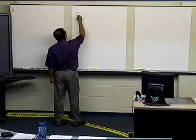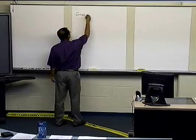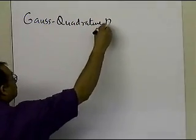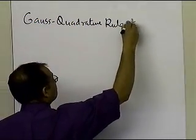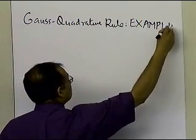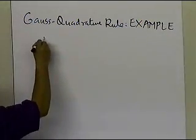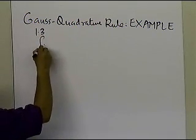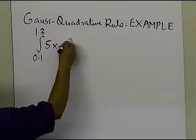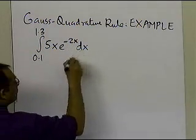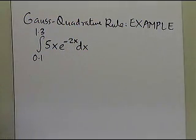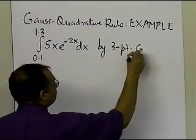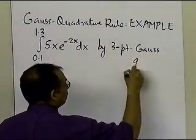In this segment, we're going to take an example of the Gauss quadrature rule. So let's suppose somebody tells you to integrate the function from 0.1 to 1.35 of x·e^(-2x) dx. They ask you to integrate this particular function by the three-point Gauss quadrature rule.